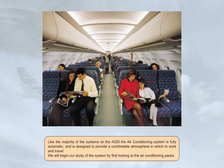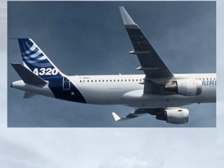Like the majority of the systems on the A320, the air conditioning system is fully automatic and is designed to provide a comfortable atmosphere in which to work and travel. We will begin our study of the system by first looking at the air conditioning packs. The A320 is equipped with two air conditioning packs located in the wing root area forward of the landing gear bay. Let's look at how a pack works.